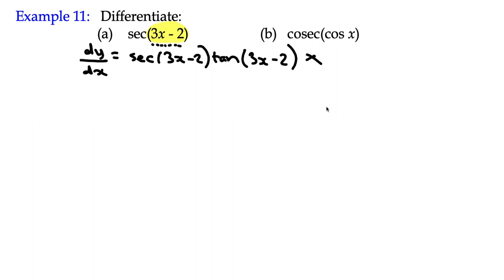3x minus 2 differentiates to 3, so we're multiplying by the derivative of the inside term, which quite easily simplifies to just then 3 sec of 3x minus 2 multiplied by the tan of 3x minus 2. And that's it. So although it looks slightly more complex, we're still applying that informal chain rule.